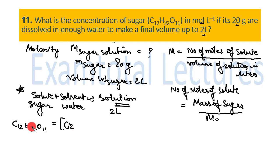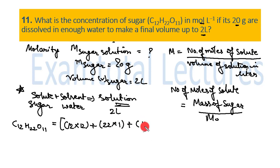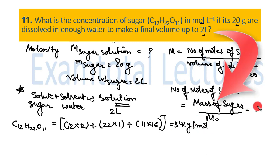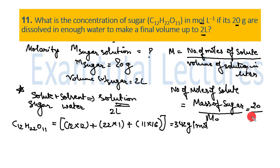Molar mass of C₁₂H₂₂O₁₁: 12 carbon atoms × 12 g/mol + 22 hydrogen atoms × 1 g/mol + 11 oxygen atoms × 16 g/mol. This gives a molar mass of 342 grams per mole. Now we put in the values.